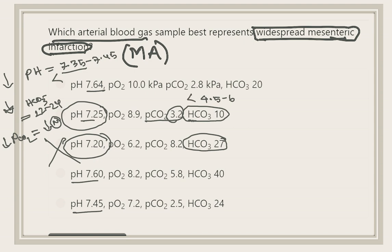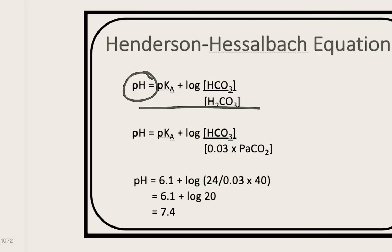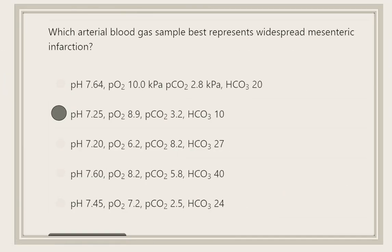In option B, the partial pressure of carbon dioxide is 3.2, and the normal range is 4.5 to 6, so it is also reduced. This confirms that pH is reduced, bicarbonate is reduced, and pCO2 is also reduced — consistent with compensated metabolic acidosis. Therefore, our final answer is option B.